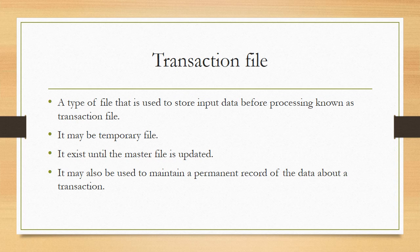Transaction files are not deleted until the master file is updated. For example, if there is a student's address in the master file and the address needs to be updated, the information related to the student's data will be stored in the transaction file, the address will be updated, and then the master file is updated. After that, the temporary data stored in the transaction file can be deleted. It may also be used to maintain a permanent record of data about a transaction — it is not necessary that these are always temporary files.